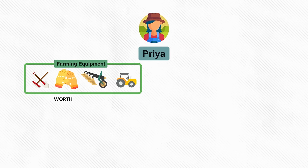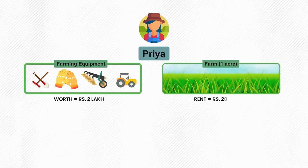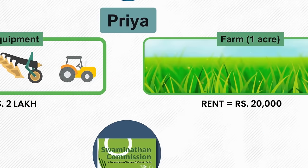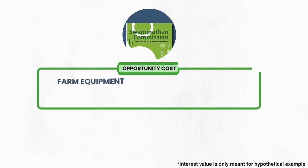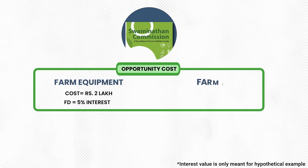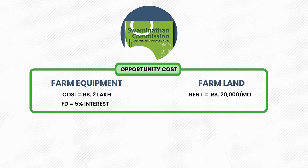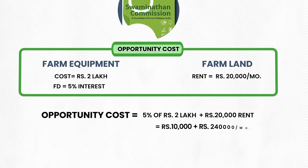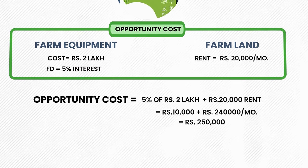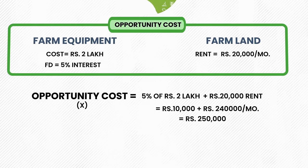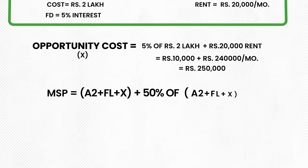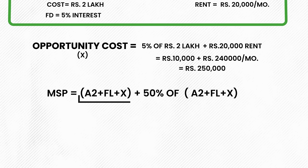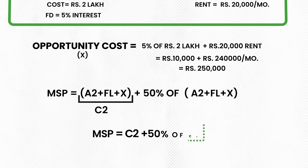To make this simple — let's say Priya is a farmer who owns farming equipment worth 2 lakh rupees and her farm of one acre could fetch a rental value of 20,000 rupees. The Swaminathan Commission says that since Priya has invested 2 lakhs into farm equipment and is using her own land, there are two opportunity costs involved. Her 2 lakh rupees, if put in an FD, could have gotten her 5% interest, and the land if rented would have gotten her 20,000 rupees per month. So her opportunity cost is 5% of 2 lakh rupees (10,000 rupees) plus 2.4 lakh rupees in rent, totaling 2.5 lakh rupees. This is the value of X. The formula becomes C2 + 50% of C2.